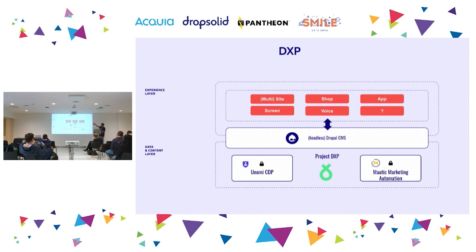A simple DXP setup could look like this: Drupal powers the experience layer, and Mautic acts as the data layer — even as a lightweight customer data platform. If you want to go further and connect other data streams, you'd need a full-blown CDP. But with just Drupal and Mautic, you can have a lightweight DXP that uses behavior data to drive the experience.